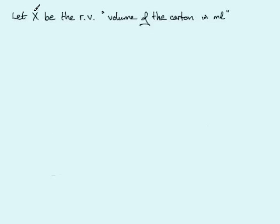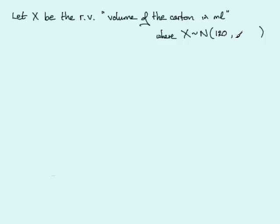I'm going to start by defining a random variable X. Let X be the random variable representing the volume of the carton in milliliters. We know that the volume of the carton follows a normal distribution. With any normal distribution we describe it by two parameters: the mean and the variance. The mean is 120 milliliters, and the second parameter is the variance, which is the standard deviation squared — so the standard deviation is 1.8, written as 1.8 squared.